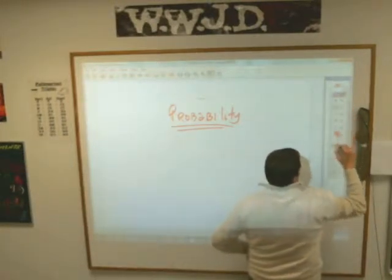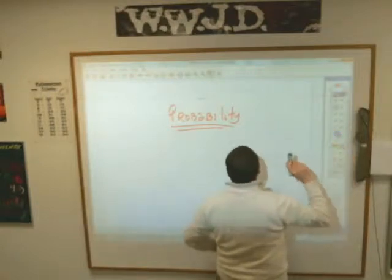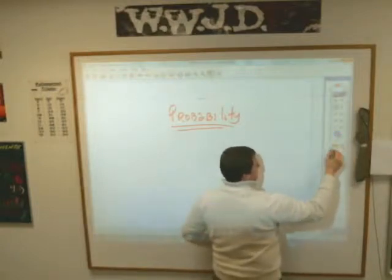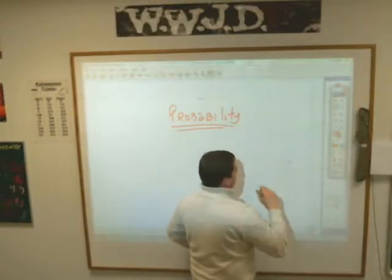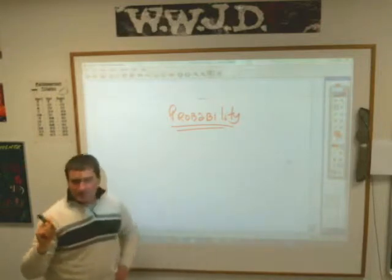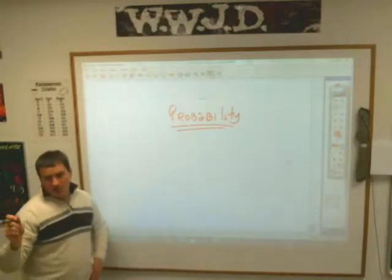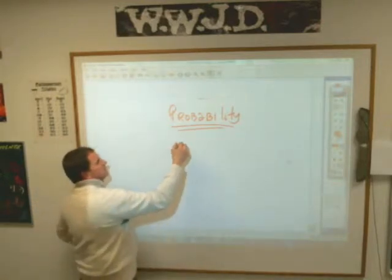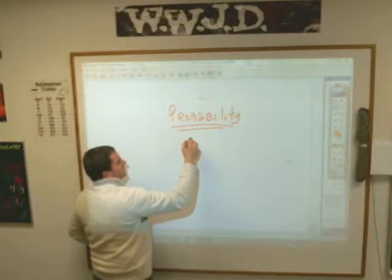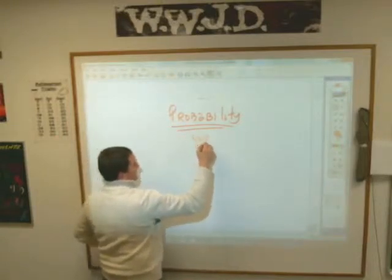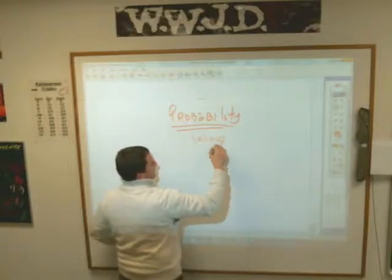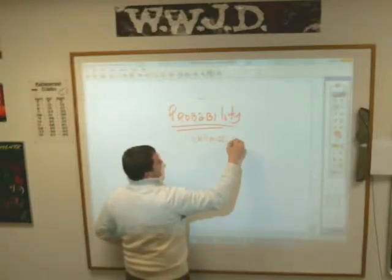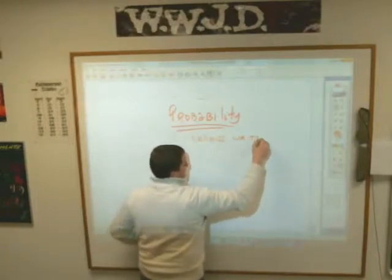Unfortunately, we talked about chance, and probability and chance — well, they're the same thing. They are different. So we can't really use chance to define probability. Probability is the likeliness of something happening, written as a fraction.